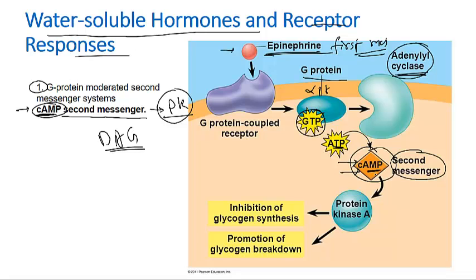Cyclic AMP acts as the second messenger and phosphorylates kinase proteins inside the cell, particularly Protein Kinase A. Once activated, Protein Kinase A has the ability to phosphorylate and activate other cellular and sub-cellular proteins. It can activate or inhibit different types of proteins inside the cell, and this process continues until the G-protein is active. Once the G-protein releases GTP — which is hydrolyzed into GDP — the G-protein becomes inactive and the signaling is stopped.